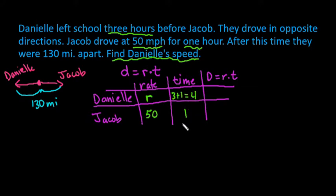So Danielle has been traveling for four hours. Jacob has only been traveling for one hour. So the distance for Danielle is four times her rate. We don't know what her rate is, so we're just going to leave it as 4r. Jacob traveled a total of 50 miles.